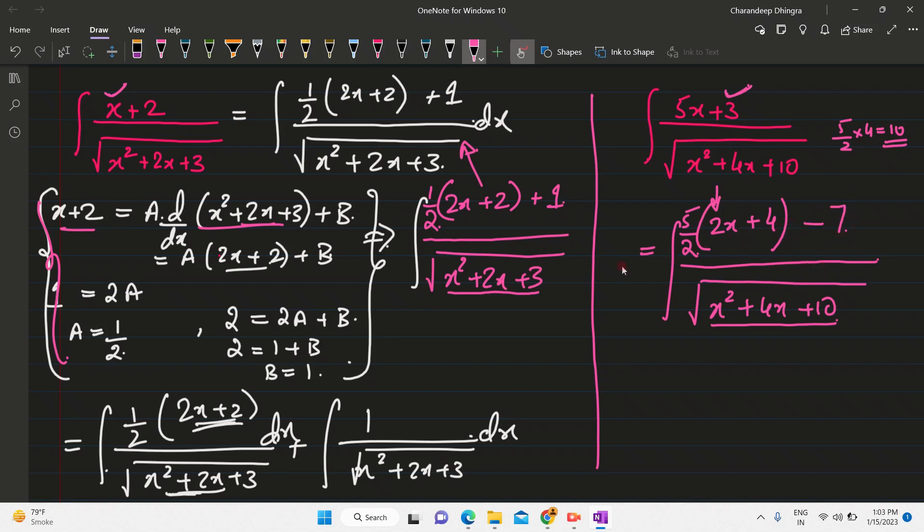Now I can go ahead and solve it. So if I use this method, this particular method, I would get value of A as 5 by 2 and value of B as minus 7. So this shortcut will help you save these steps, this entire steps,